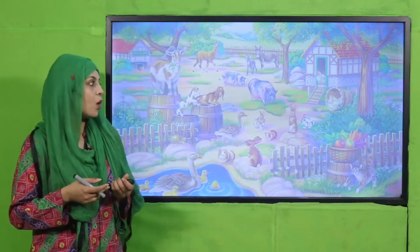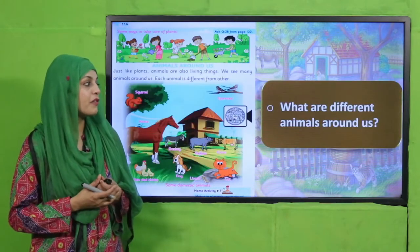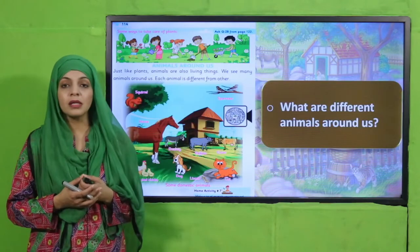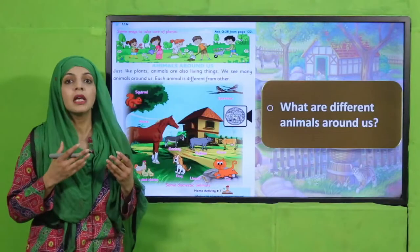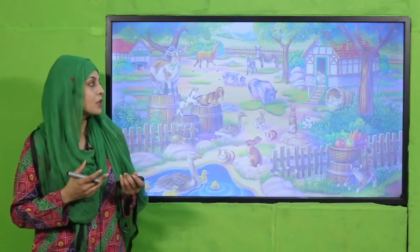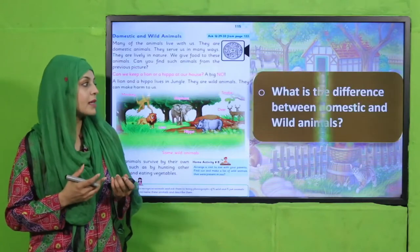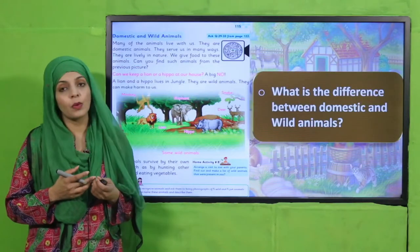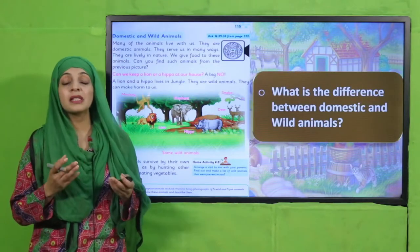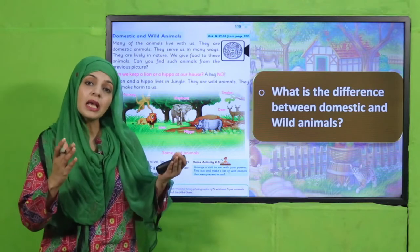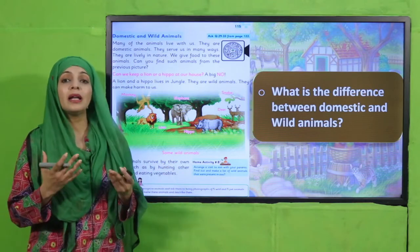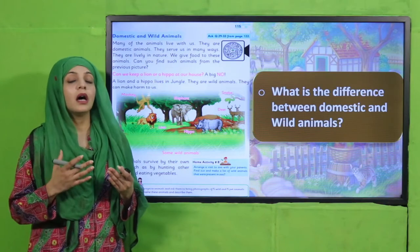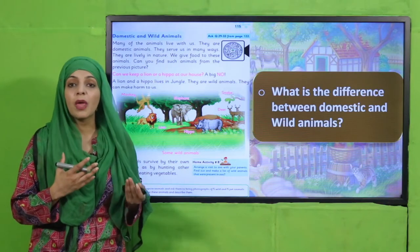What are the different animals around us? We see different domestic animals like horses, cows, goats, sheep, birds, and squirrels around us. What is the difference between domestic and wild animals? Domestic animals are those which we keep in our houses, whereas wild animals live in jungles and we cannot keep them in our houses because they are harmful.